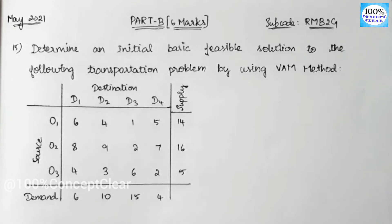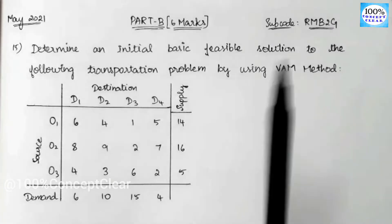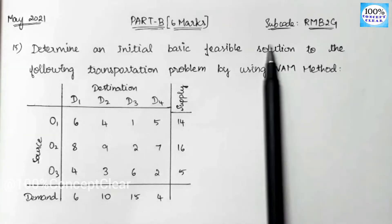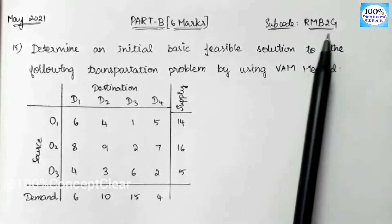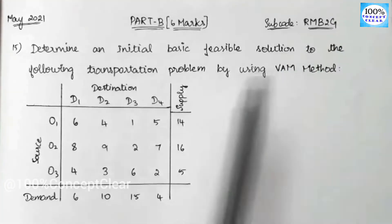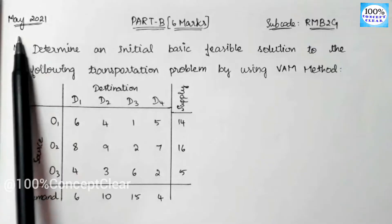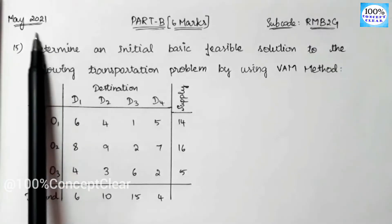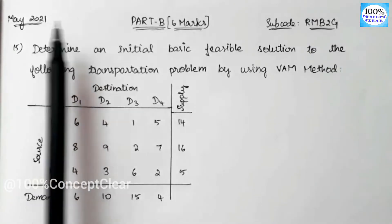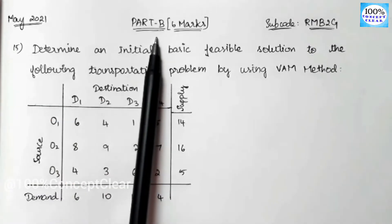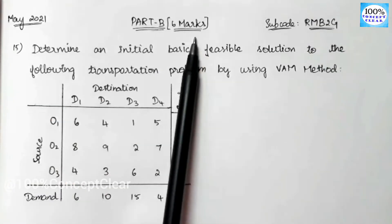In this video we have the operational research subject. The subject code is RMB2G. We are going to take Part B, the 6-mark section.